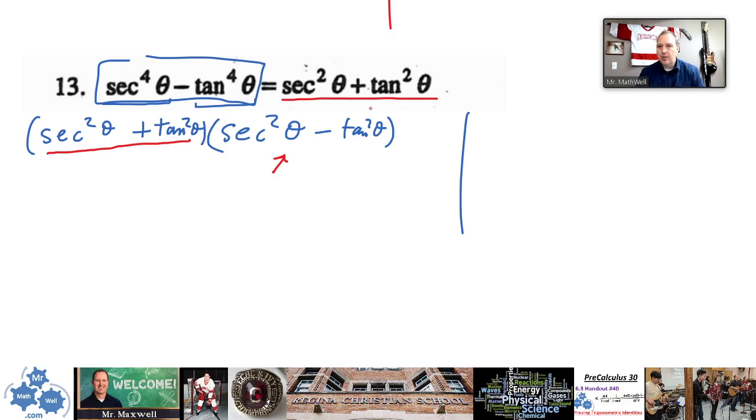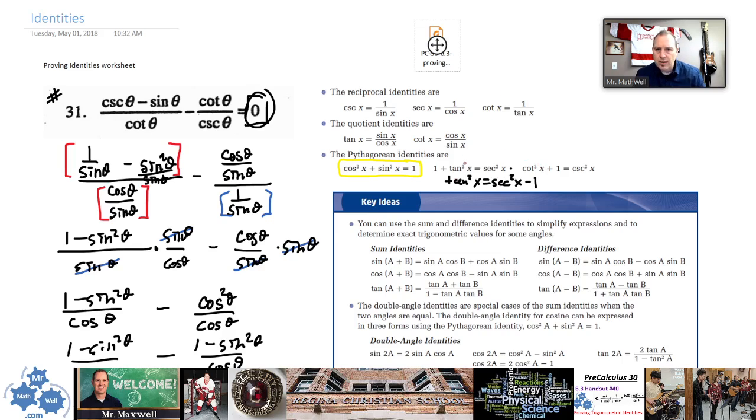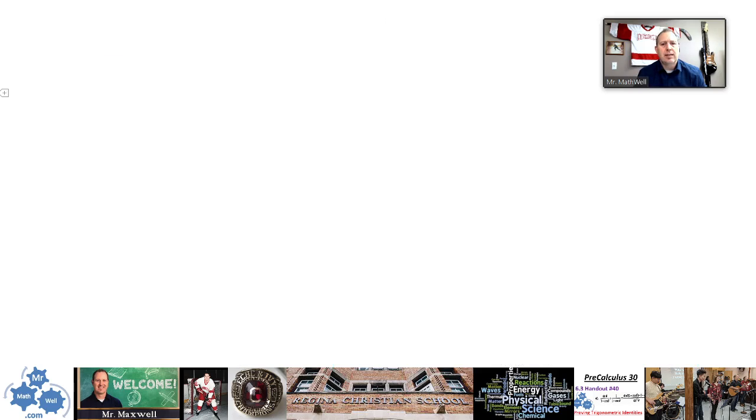So a couple things that you could do. I would look at these and I would say, you know what? I think there's an identity for secant squared and tan squared. So, oh, look at this. Tan squared x is equal to secant squared x minus one. I see.